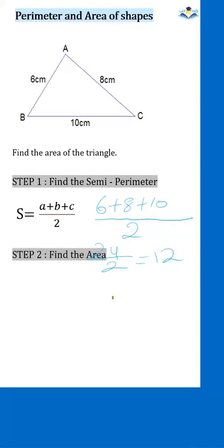Step 2 is to find the area using this formula. Area is equal to the square root of semi-perimeter multiplied by the semi-perimeter subtract a, multiplied by the semi-perimeter subtract b, multiplied by the semi-perimeter subtract c.